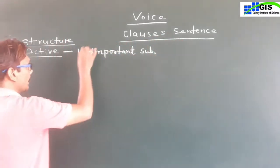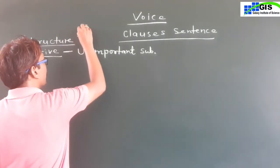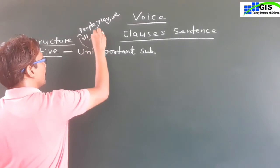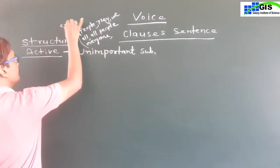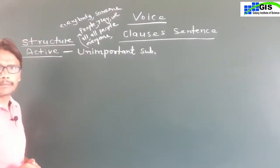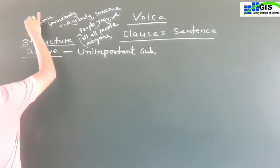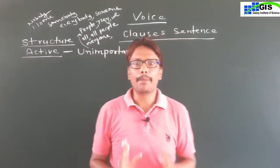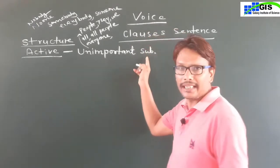These unimportant subjects have no importance in passive voice. In active voice, first of all, you will get an unimportant subject — people, they, we, all, all people, everyone, everybody, someone, somebody, no one, nobody. These are the subjects known as unimportant subjects. In active voice, first of all, you will get the unimportant subject, and then you will get the verb.